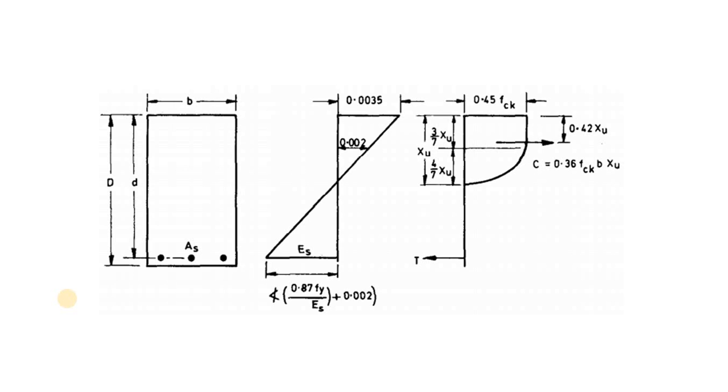During design of any concrete member as per IS-456, you always take the allowable stress in concrete as 0.45 FCK. But do you know why this is 0.45 FCK, why not 0.55 FCK or 0.35 FCK? Well, this video will explain this.